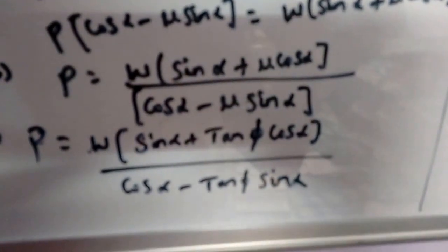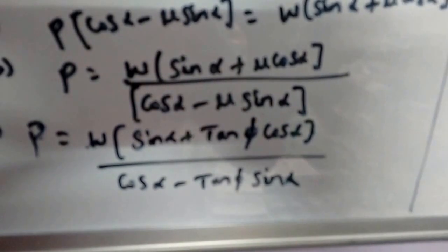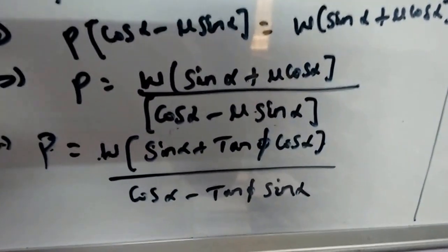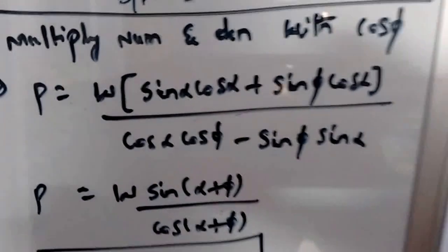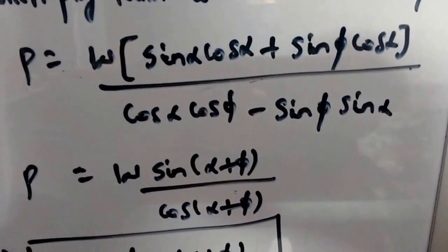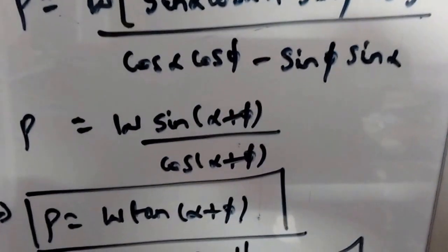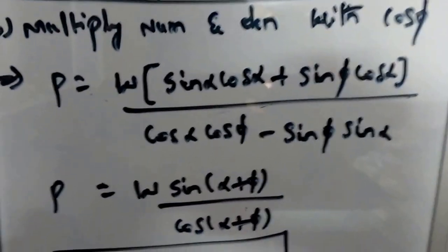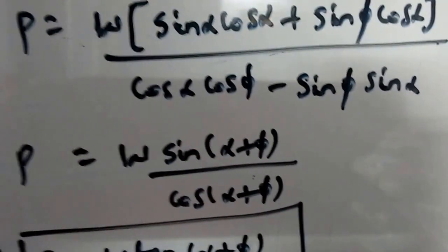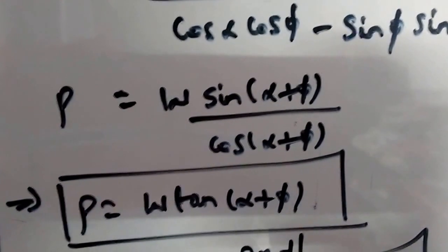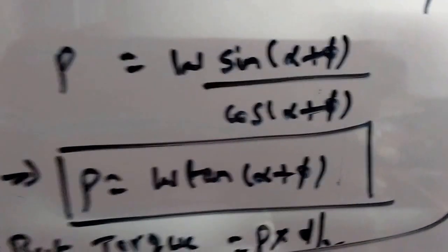We know the coefficient of friction mu equals tan(phi), where phi is the friction angle. So P = W * (sin(alpha) + tan(phi) * cos(alpha)) / (cos(alpha) − tan(phi) * sin(alpha)). Multiplying numerator and denominator by cos(phi) and applying the identities sin(A+B) and cos(A+B), this simplifies to P = W * tan(alpha + phi).